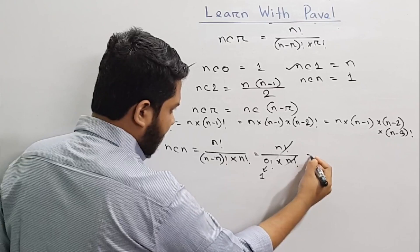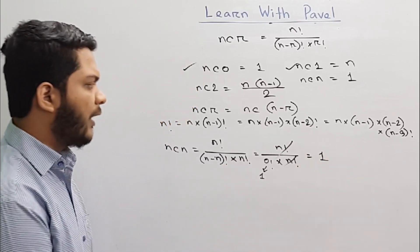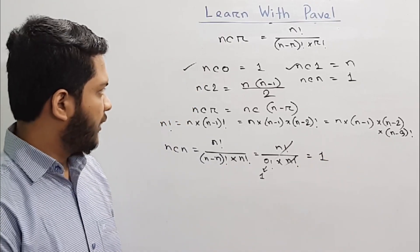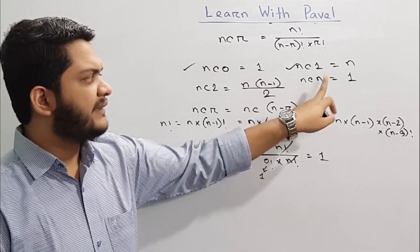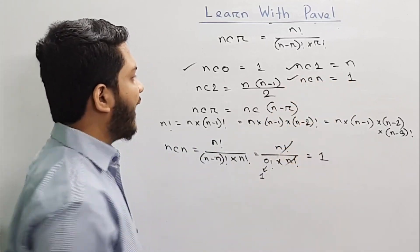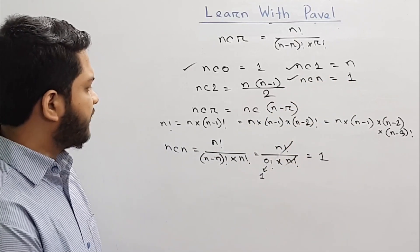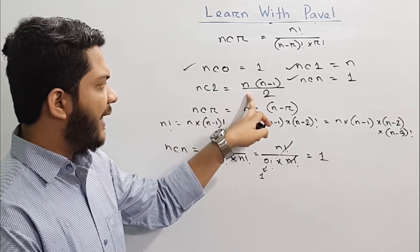So ultimately, I am going to show you the n minus 1 factorial. So I am going to show you the n minus 2 factorial.